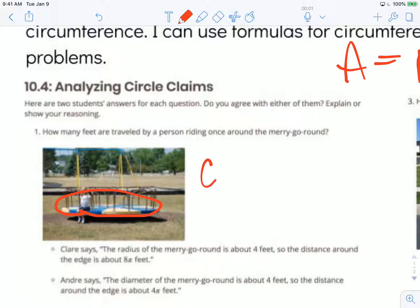Claire says the radius of the merry-go-round is about 4 feet, so the distance around the edge is about 8π feet. So she's saying the radius, or the distance from the center to the circle itself, is about 4 feet.